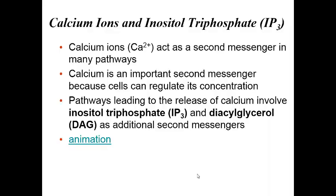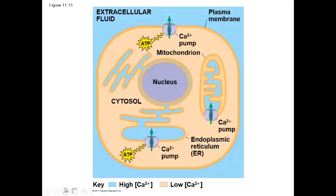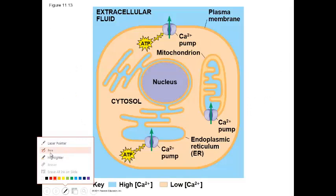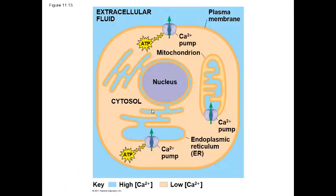Another important second messenger is calcium. Calcium is an important second messenger because the cell tightly regulates its concentration. Using active transport, calcium is pumped into the endoplasmic reticulum and also into the mitochondria. Since we so effectively control its concentrations, we often use it as a second messenger in signal transduction pathways.